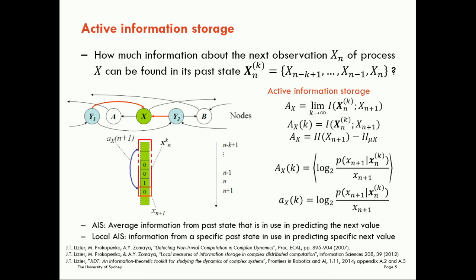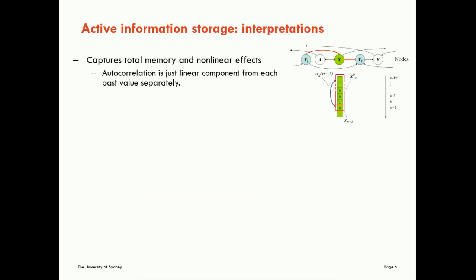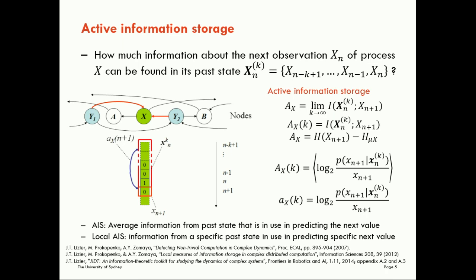So what that gives us then is a time series of how the information storage is being used in the dynamics of the variable at every point in time. So we can see, using these local or pointwise values, how the information storage in use is fluctuating through time, and that may well be related to the dynamics of the system and tell us something very interesting about what's taking place there. We'll look at examples of that later on.